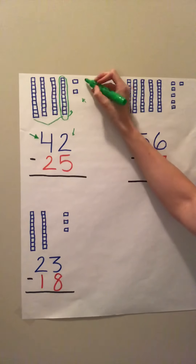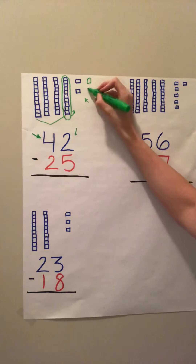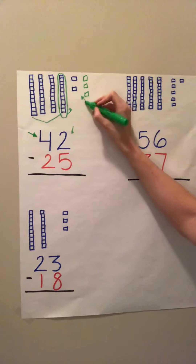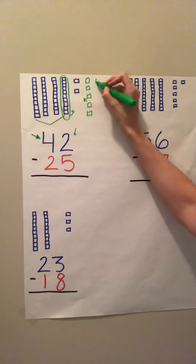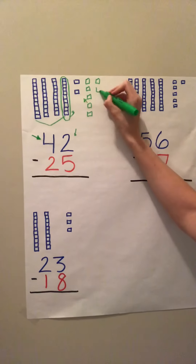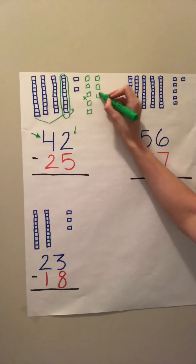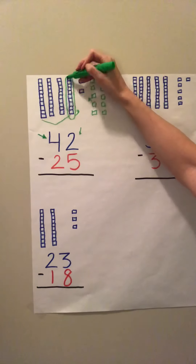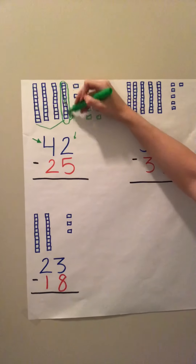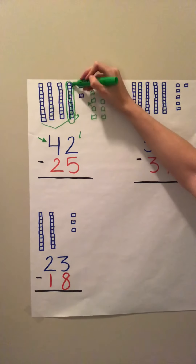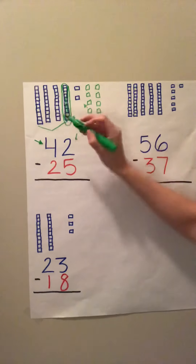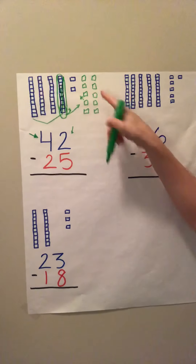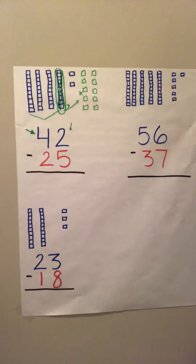So we're going to break that group of ten into ten ones by itself. All I did is take this group of ten, cross it out, and move it over here to make ten individual ones.